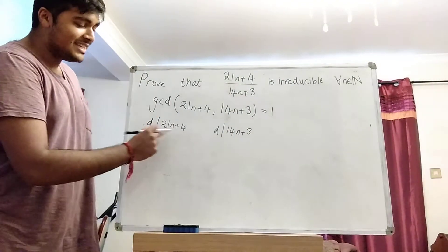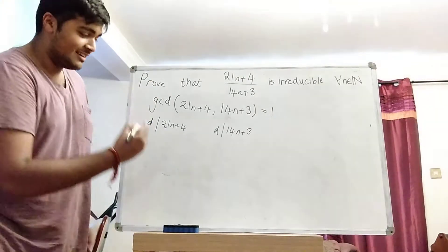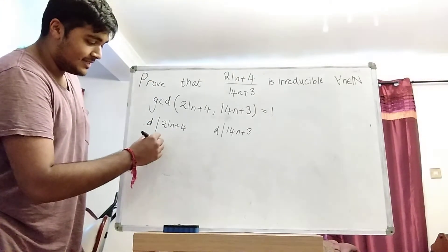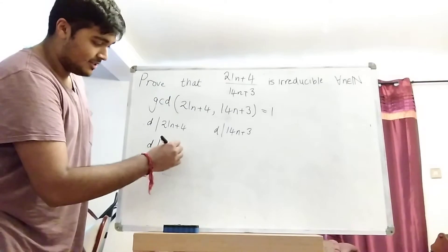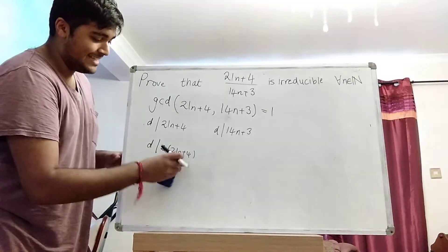Well, if D divides 21n plus 4, then certainly it divides 2 times that number. So D divides 2 times 21n plus 4. Well that thing there is just 42n plus 8.